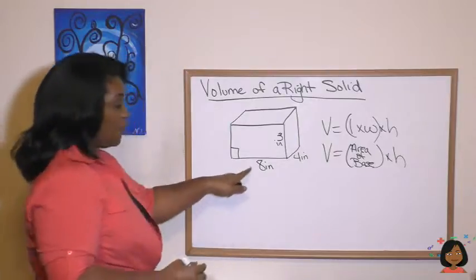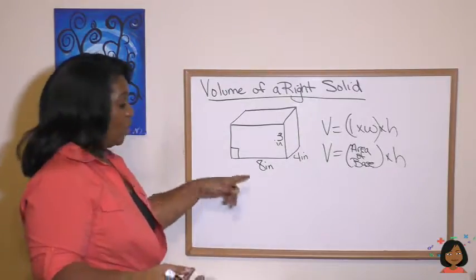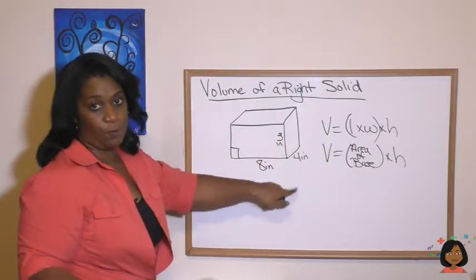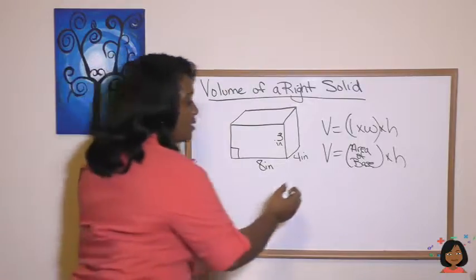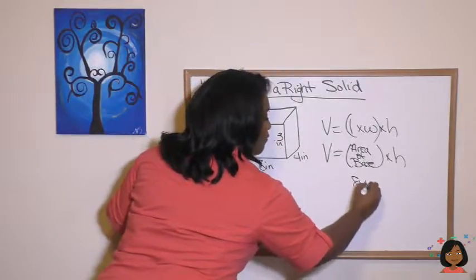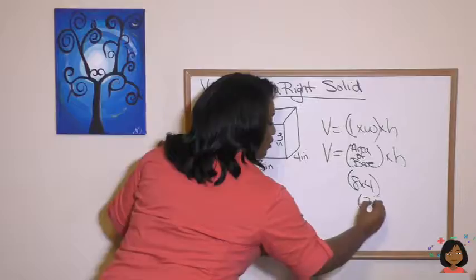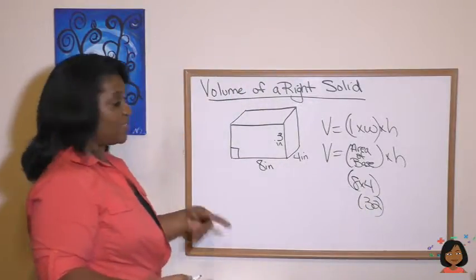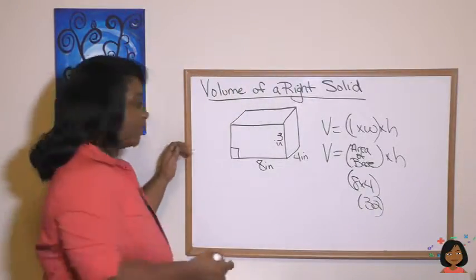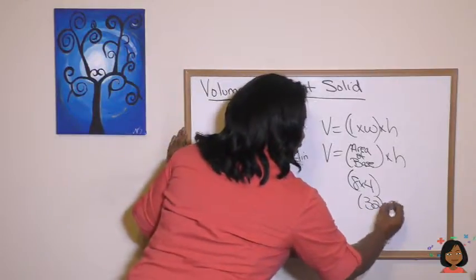The area of the base, our base is a rectangle. We know the sides are 8 and 4. So the area of the base is 8 times 4, which is 32. And then we're going to times it by the height here, which is 3.